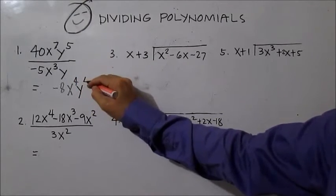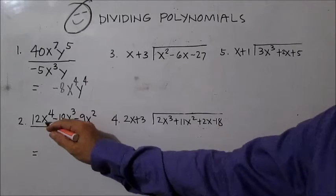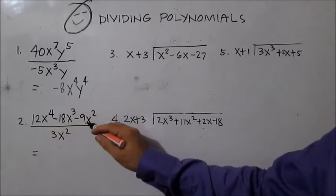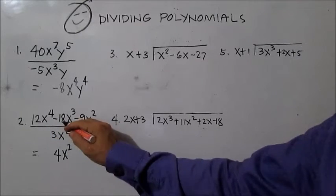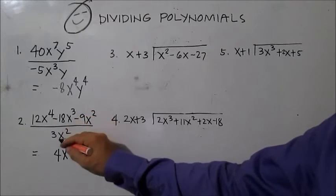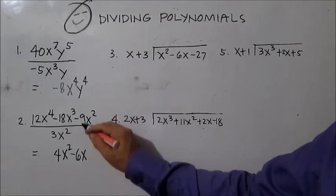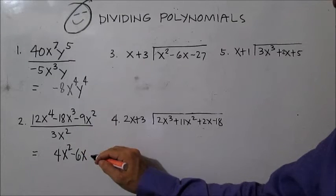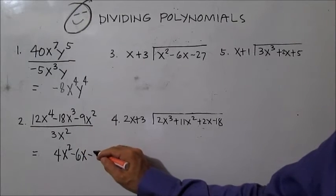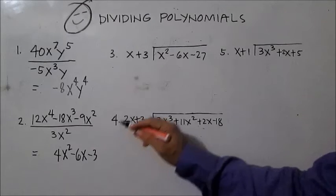For number two, divide: negative 18x cubed divided by 3x squared is negative 6. Then negative 9x squared divided by 3 is negative 3.